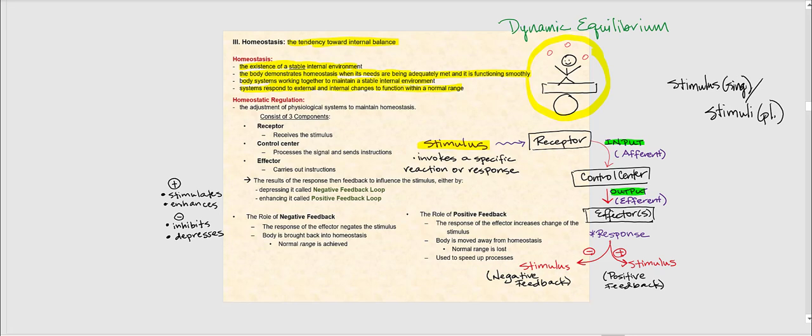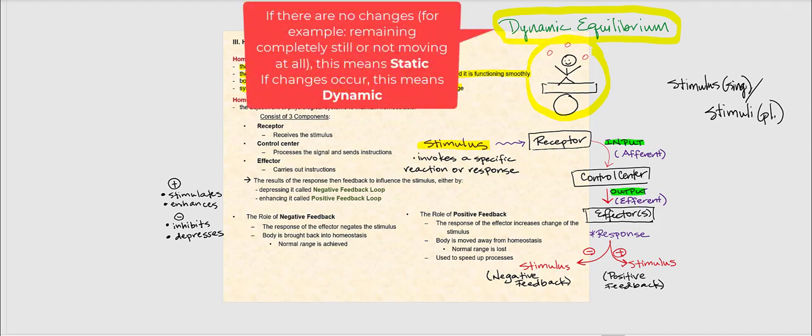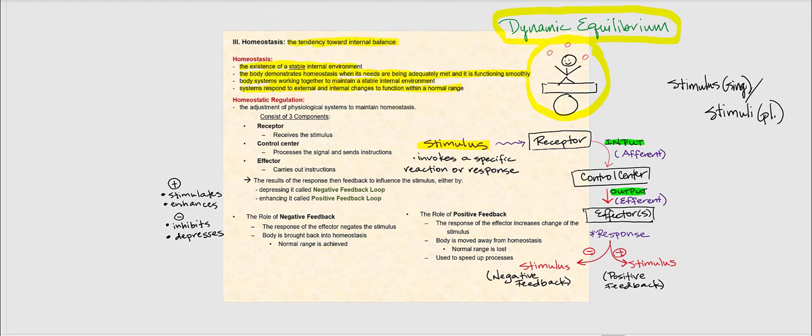Because of this, sometimes we refer to homeostasis as being dynamic equilibrium. The idea is you make small, fine adjustments — you're not completely still. If you're still, we don't refer to it as dynamic; the term dynamic means changes. Remaining balanced on that plank of wood while juggling a bunch of balls is the equilibrium. Think of homeostasis as internal stability whereby you make small, fine adjustments.